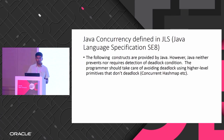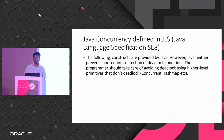The JVM does not prevent deadlock, nor does it require you to detect deadlock — the program has to take care of it using the constructs available. That's why you have high-level constructs and data structures that provide concurrency.